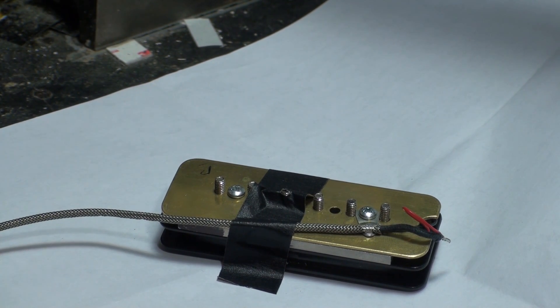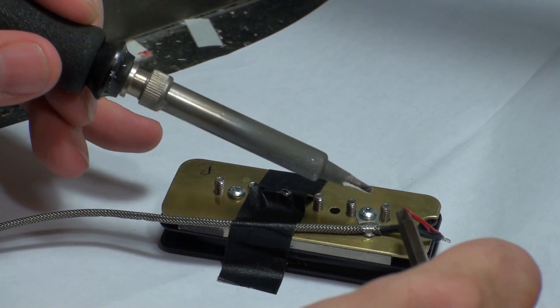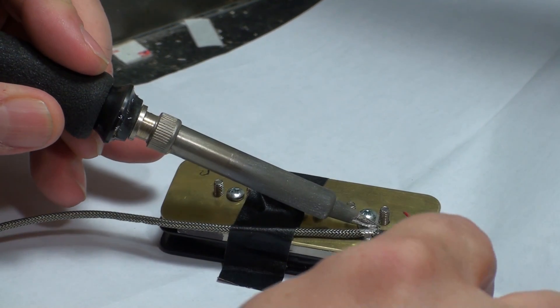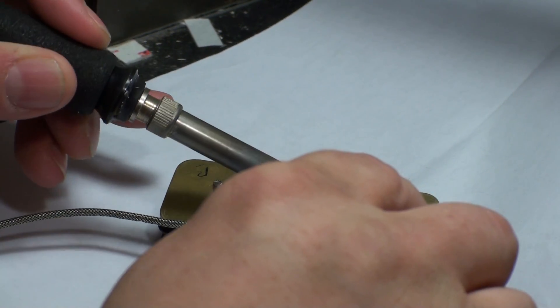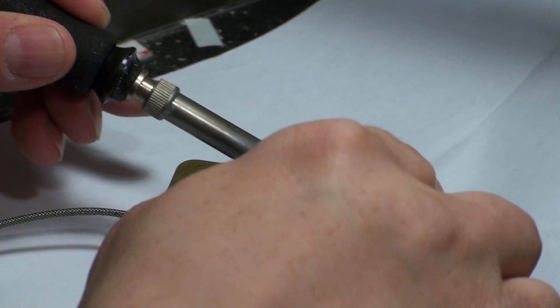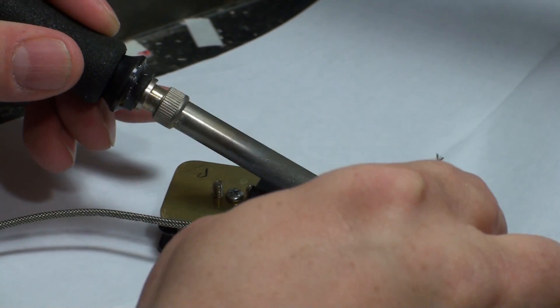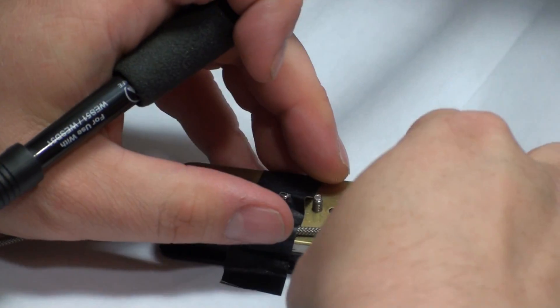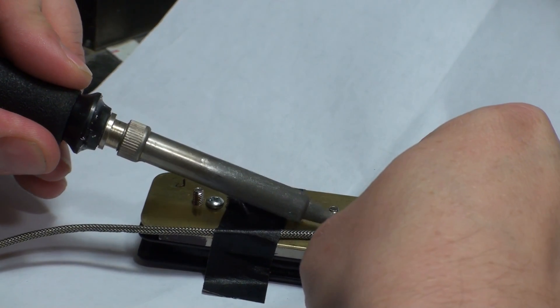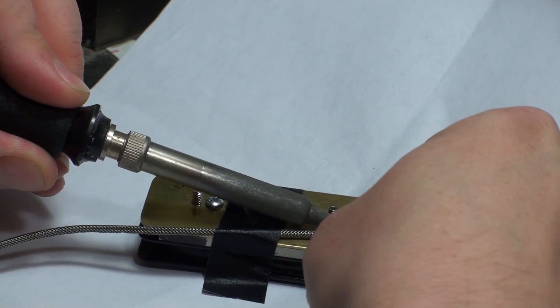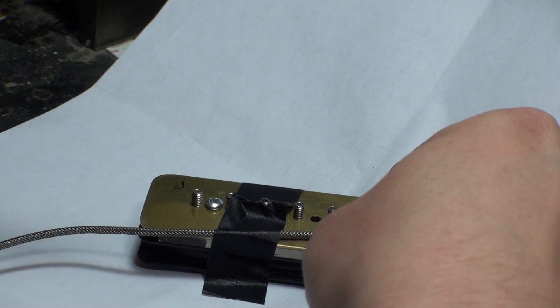Take your soldering iron and you can see that black lead. You want to unsolder that black lead, and that's why we don't want to let that braided lead move around. Stick that back down.